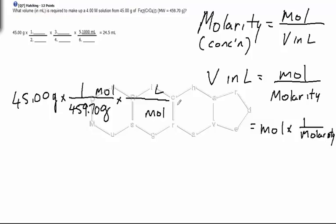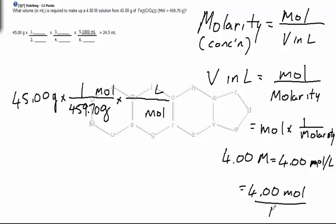What is that relationship you might ask? Well it's from here, the 4.00 big M. 4.00 big M is the same as saying 4.00 moles per liter. Or another way of saying that, it's equal to 4.00 moles in one liter.